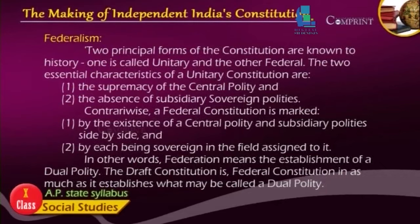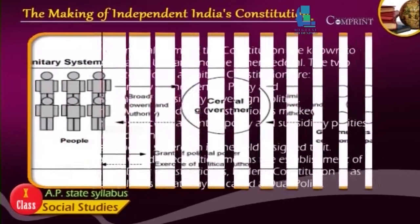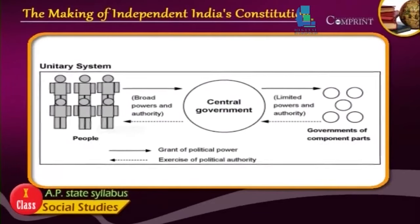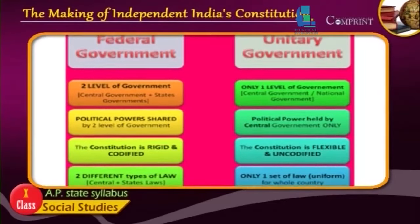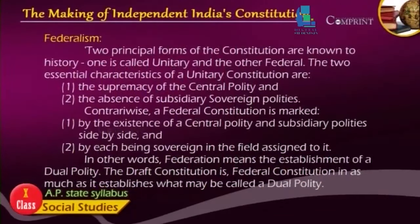Federalism: Two principles of forming a constitution are known to history — one is called unitary and the other is called federal. The two essential characteristics of a unitary constitution are the supremacy of the central polity and the absence of subsidiary sovereign polities. A federal constitution, on the contrary, is marked by the existence of the central polity and subsidiary polities side by side, each being sovereign in the field assigned to it. In other words, federation means the establishment of a dual polity, and the draft constitution is a federal constitution in as much as it establishes what may be called a dual polity.